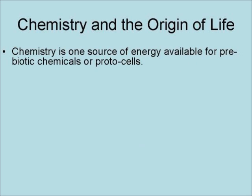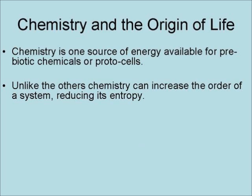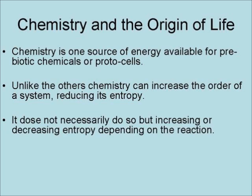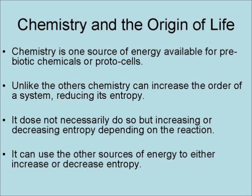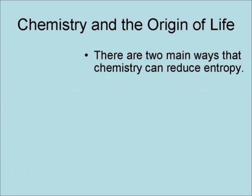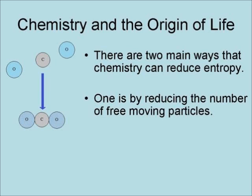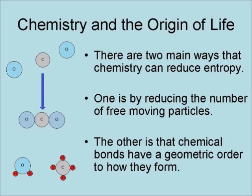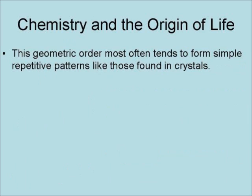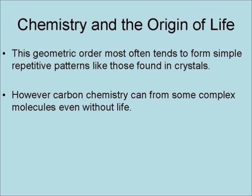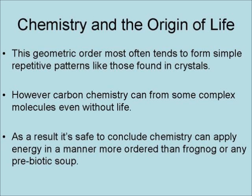Chemistry is one source of energy available for prebiotic chemicals or protocells. Unlike the others, chemistry can increase the order of a system, thereby reducing its entropy — though it does not necessarily do so, as increasing or decreasing entropy depends upon the reaction. It can also use other sources of energy to either increase or decrease entropy. There are two main ways that chemistry can reduce entropy: by reducing the number of free particles, which reduces the number of equivalent configurations, and through the geometric order of chemical bonds, which can produce a degree of order in the atoms, most often forming simple, repetitive patterns like those found in crystals. Carbon chemistry can form some complex molecules even without life.